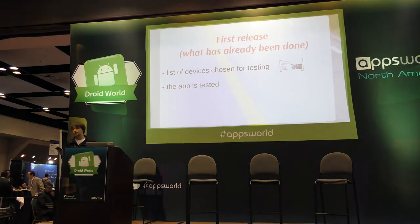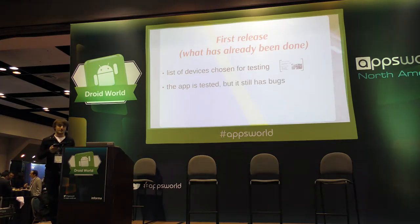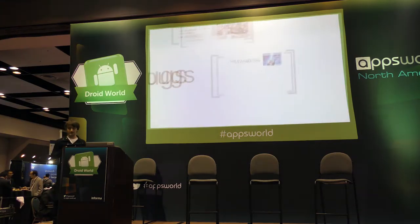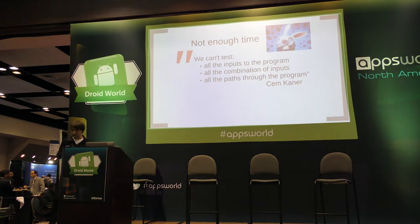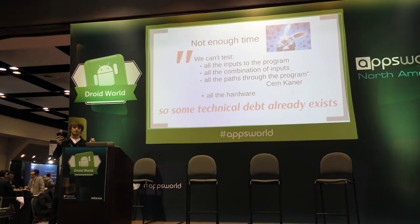Before the first release, your app was tested — you have a quality assurance team or outsourced it somewhere. But it still has some bugs. Nowadays we don't need perfect applications working without bugs; we just need working applications, and quickly. So we always don't have time. We can't test all the problems — that's an axiom in software testing. Plus, we can't test on all the hardware. So even after the first release, you already have some technical debt.